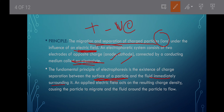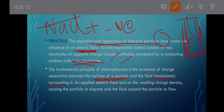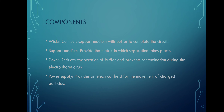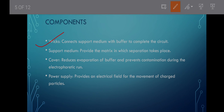The setup involves an anode and a cathode in a solution — similar to the NaCl experiment connected using a battery. An applied electric field results in charge density causing the particles to migrate and the fluid around the particle to flow. Positive and negative charged particles accumulate according to anode and cathode. Wicks support the medium with the buffer to complete the circuit.